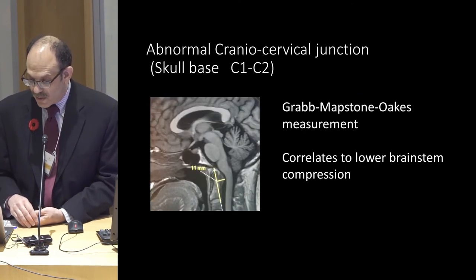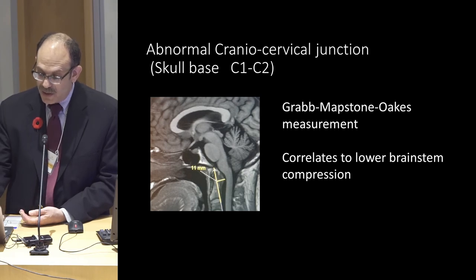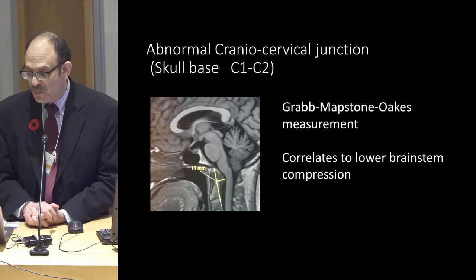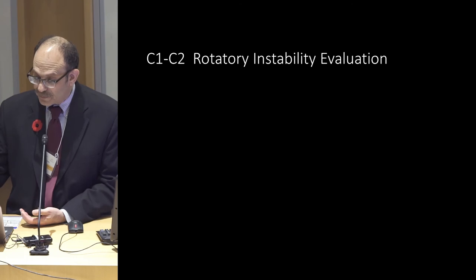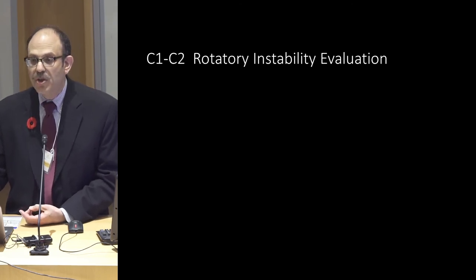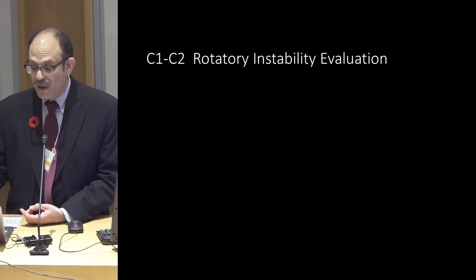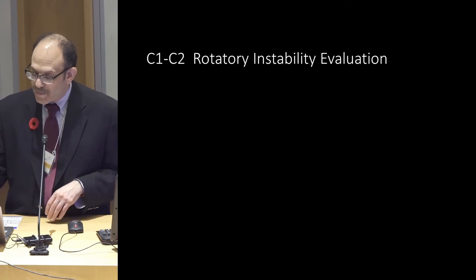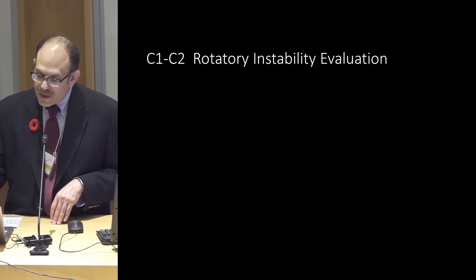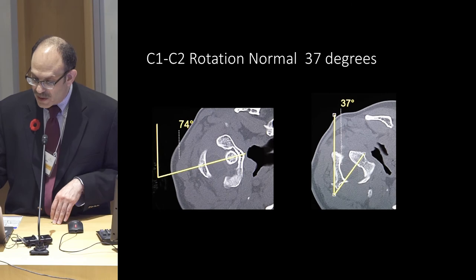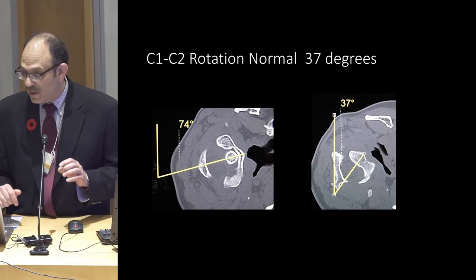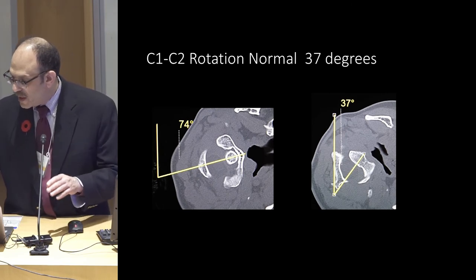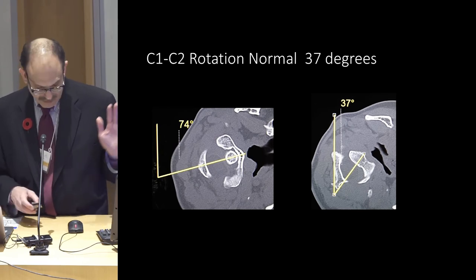The Grabb-Mapstone-Oakes measurement simply suggests there is tissue pushing on the brainstem. C1 and C2 together account for a little more than half of the total spine rotation, and my imaging for C1-C2 is simply to look for that rotation. There are cruciate and transverse ligaments which hold things together.